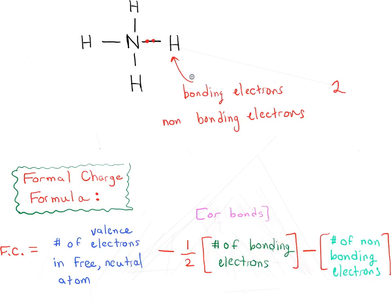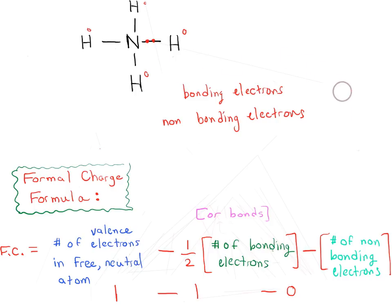There are no lone pairs around our hydrogen, so there are zero non-bonding electrons. The formal charge starts with the number of valence electrons in a free neutral atom — hydrogen has one valence electron. We subtract half the number of bonding electrons: one half times two gives us one. So one minus one minus zero gives us zero — it's a neutral hydrogen. If you apply this for each of the other three hydrogens, you get the same calculation: one minus one minus zero, giving neutral hydrogens in each case.